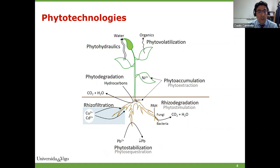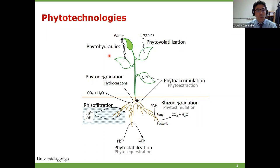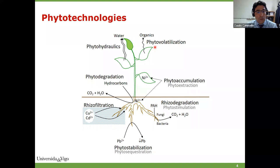Stabilization of metals in the soil by forming less soluble fractions is called phytostabilization. Plants can also absorb water, and with that water absorb contaminants that travel to the leaves and are volatilized to the atmosphere — called phytovolatilization. Some authors also include phytohydraulics, distinguishing between volatilization of contaminants and volatilization of water from groundwater to the atmosphere. So we have a set of different phytotechnologies using different plants for different contaminants.